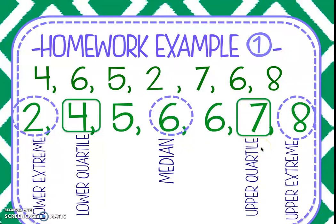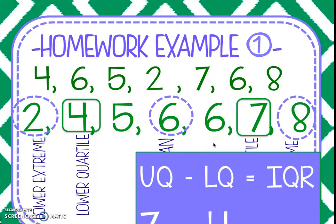Now we want the range of the quartiles, the interquartile range. So we're going to subtract. We do our upper quartile minus the lower quartile. We had an upper quartile of seven, lower quartile of four, so the interquartile range is three.